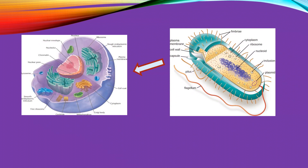Eukaryotic cells are believed to have evolved from early prokaryotes that were engulfed by phagocytosis. As we know, prokaryotic cells are simpler than eukaryotic cells, while eukaryotic cells are more complex. Prokaryotic cells lack a nucleus — that is why they are called prokaryotes — while eukaryotes have a complete nucleus.